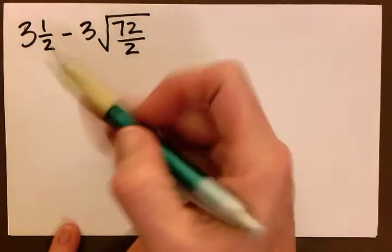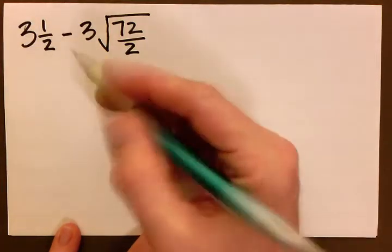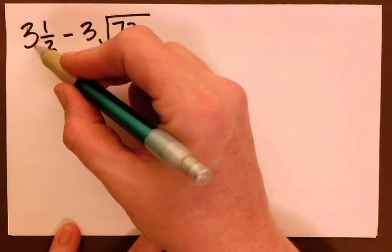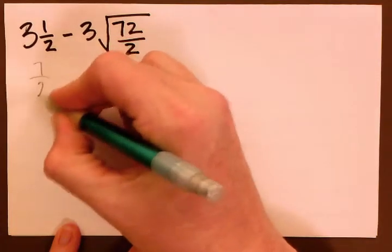So the first thing I'm going to do is change this mixed number, 3 and 1 half, into an improper fraction, which when we do 2 times 3 is 6 plus 1 is 7. So that gives us 7 over 2.